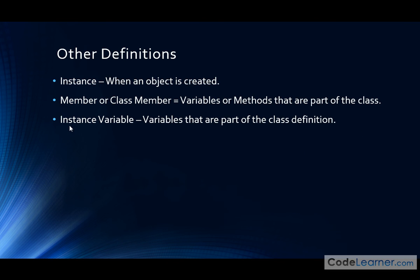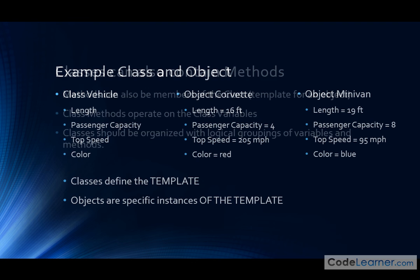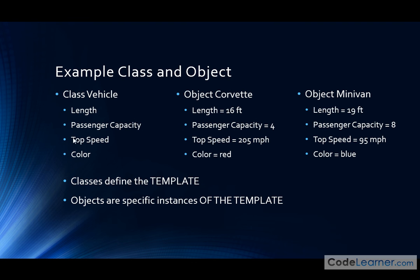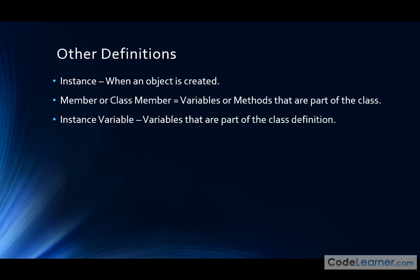You might also see the term instance variable — these are just the variables that are part of the class definition. The most important thing is: when you see instance, it refers to when something is created. A member refers to what the class consists of — usually variables or methods.